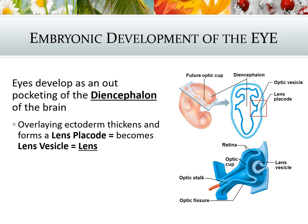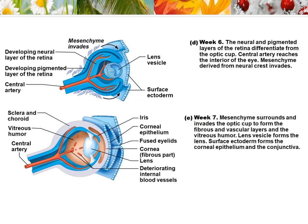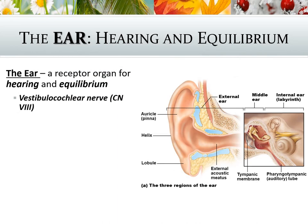Regarding embryonic development, the eye develops from an outpocketing of the diencephalon — where the thalamus, hypothalamus, and epithalamus are located. An overlying ectoderm thickens to become the lens placode, then lens vesicle, then the lens. Internally the optic vesicle from the diencephalon becomes the optic cup, which then becomes the retina.